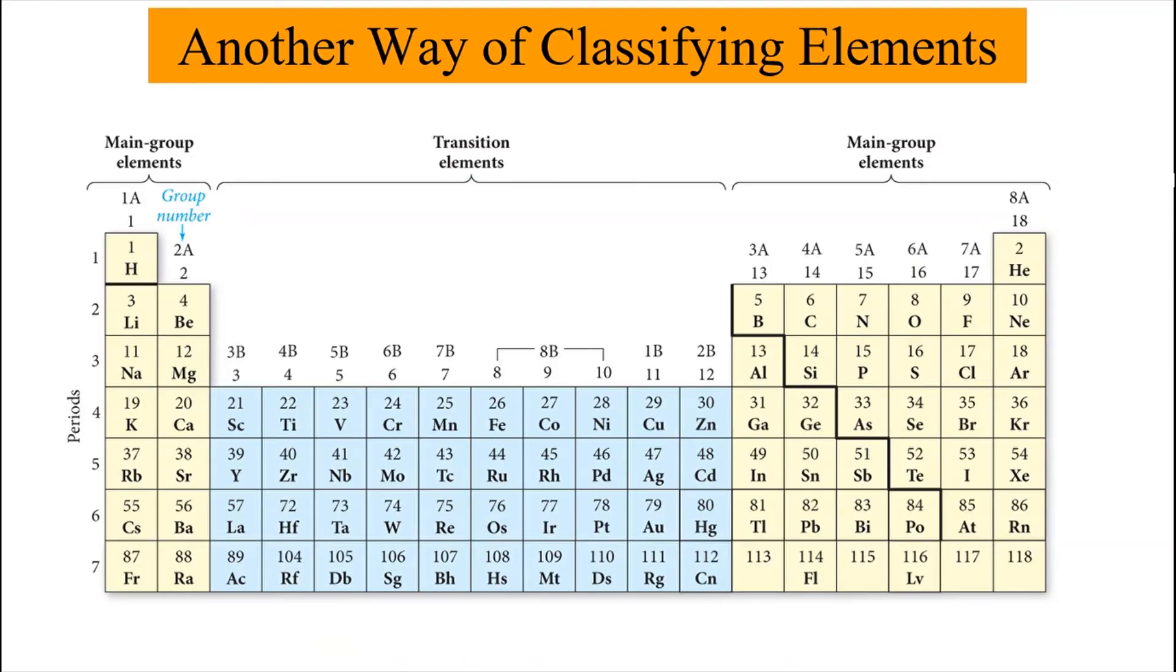There is another way of classifying the elements, and this is going to come later on into play when we study a little more about the architecture of atoms, particularly the way electrons are organized. So once more, the elements in the middle of the periodic table - the ones that have group numbers that have a letter B attached - are called the transition elements or transition metals. And then the ones that have group numbers that have a letter A connected to them are called the main group elements.